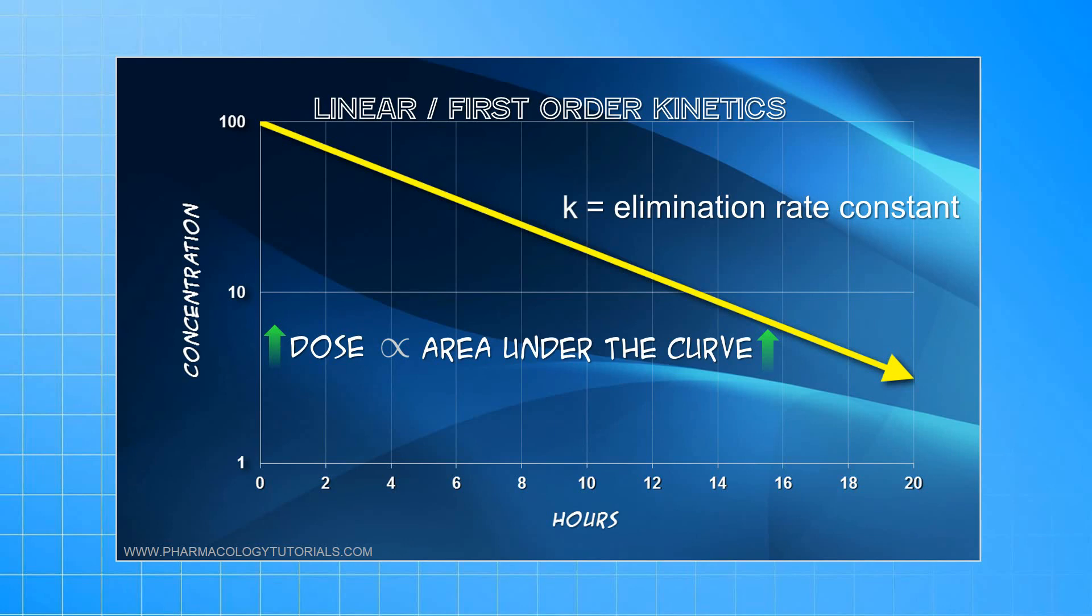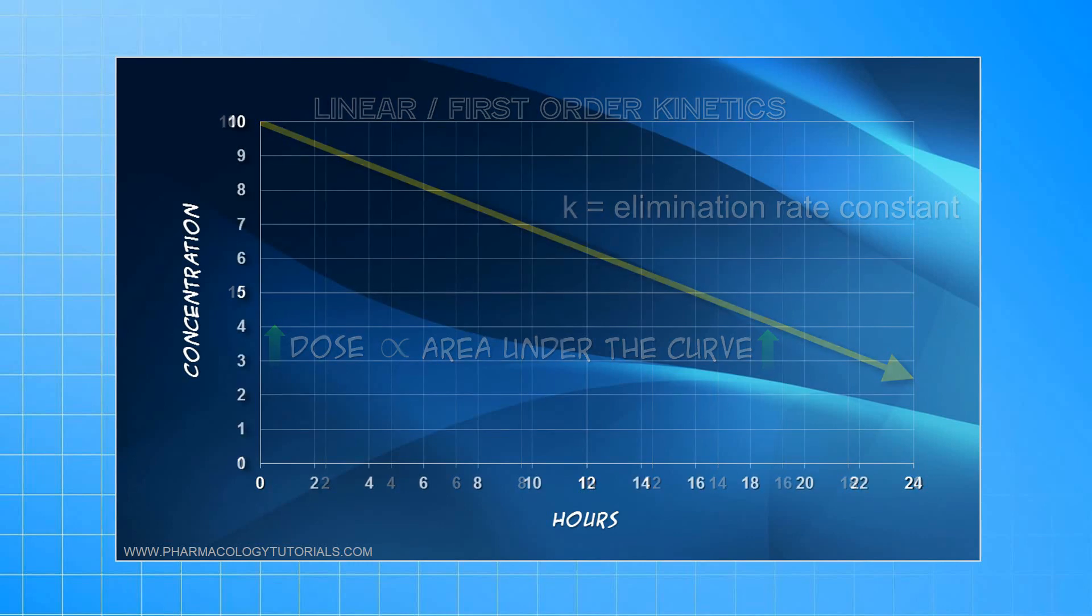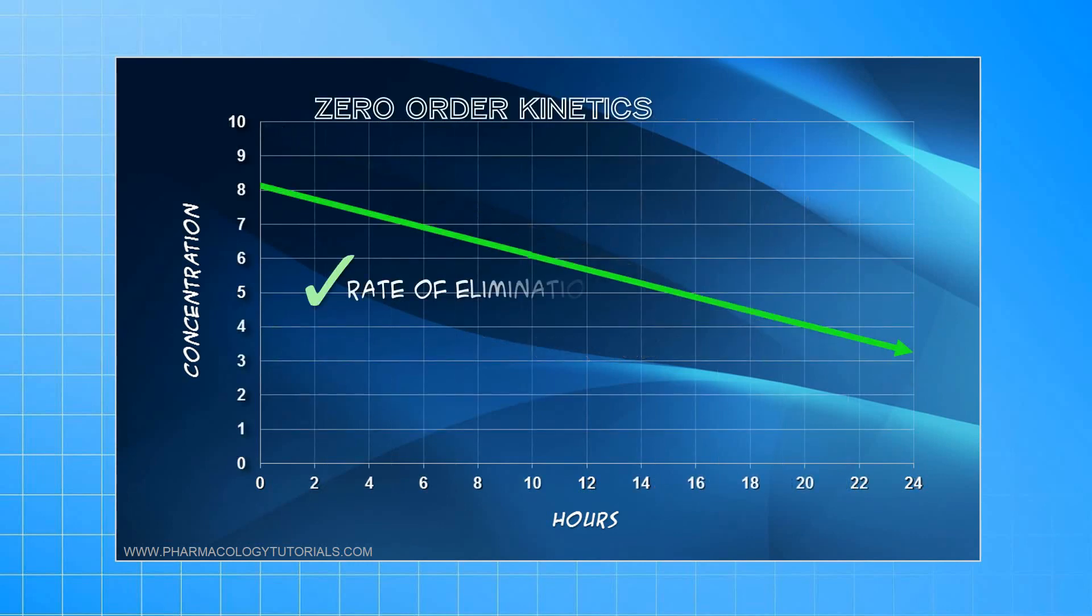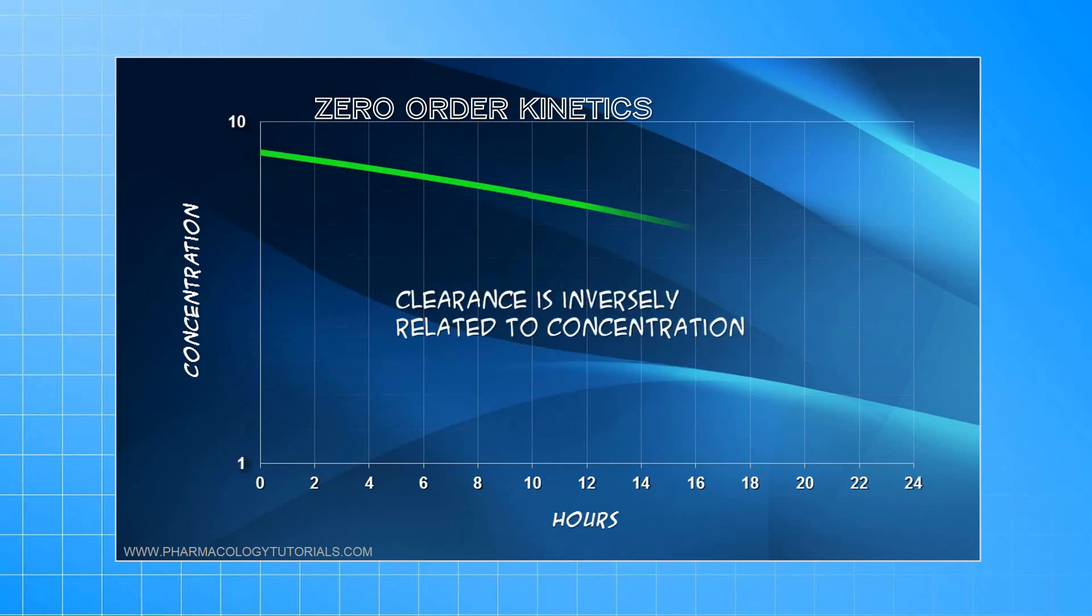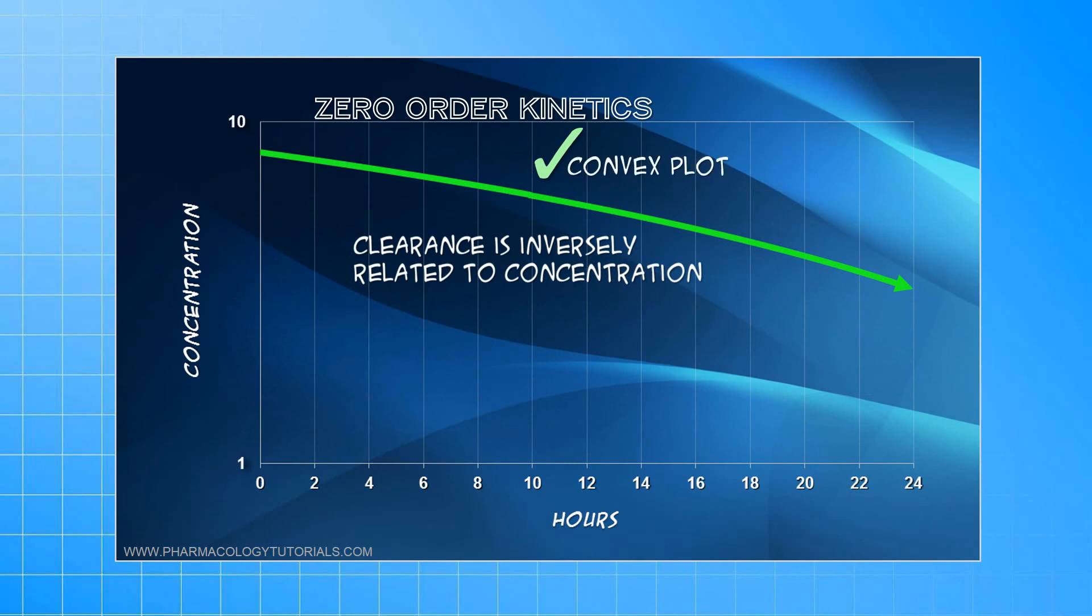Under non-linear kinetics, however, the rate of elimination is not concentration-dependent, but is a constant. Here, clearance becomes inversely related to the concentration. The semi-log plot here is convex. Because the clearance is inversely related to the concentrations, as you increase the dose, the clearance decreases and the area under the curve shows disproportionately large increases.